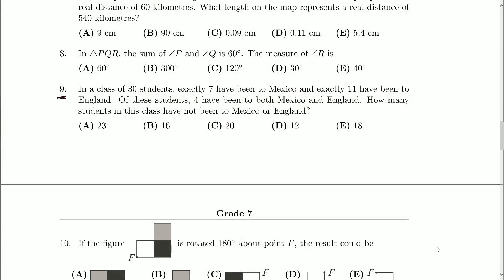In a class of 30 students, exactly 7 have been to Mexico and exactly 11 have been to England. Of these students, 4 have been to both Mexico and England. How many students in the class have not been to Mexico or England?